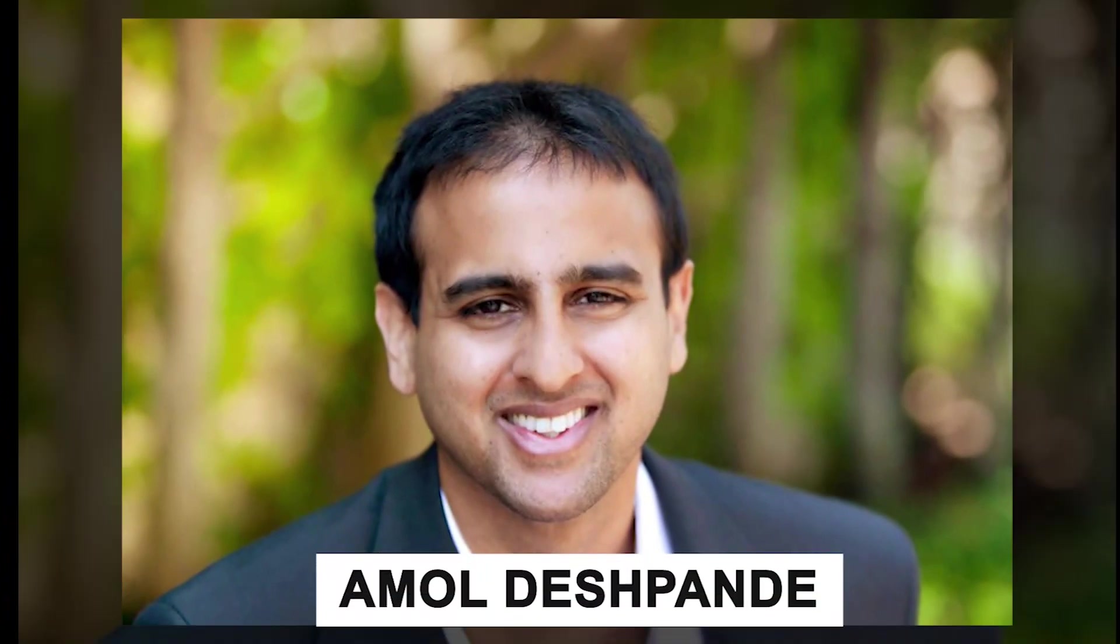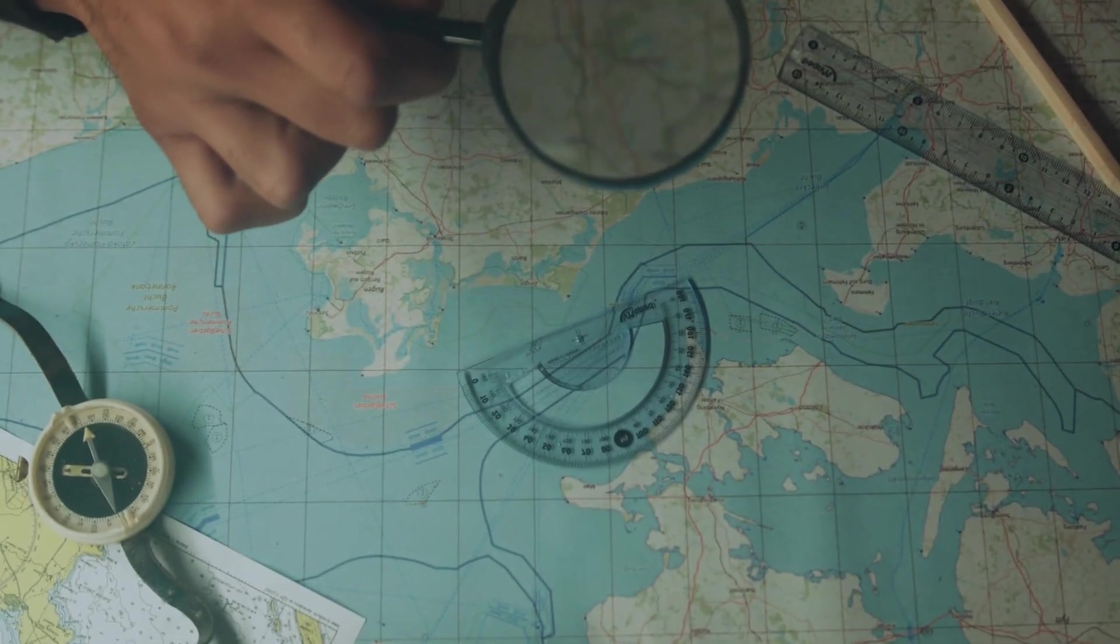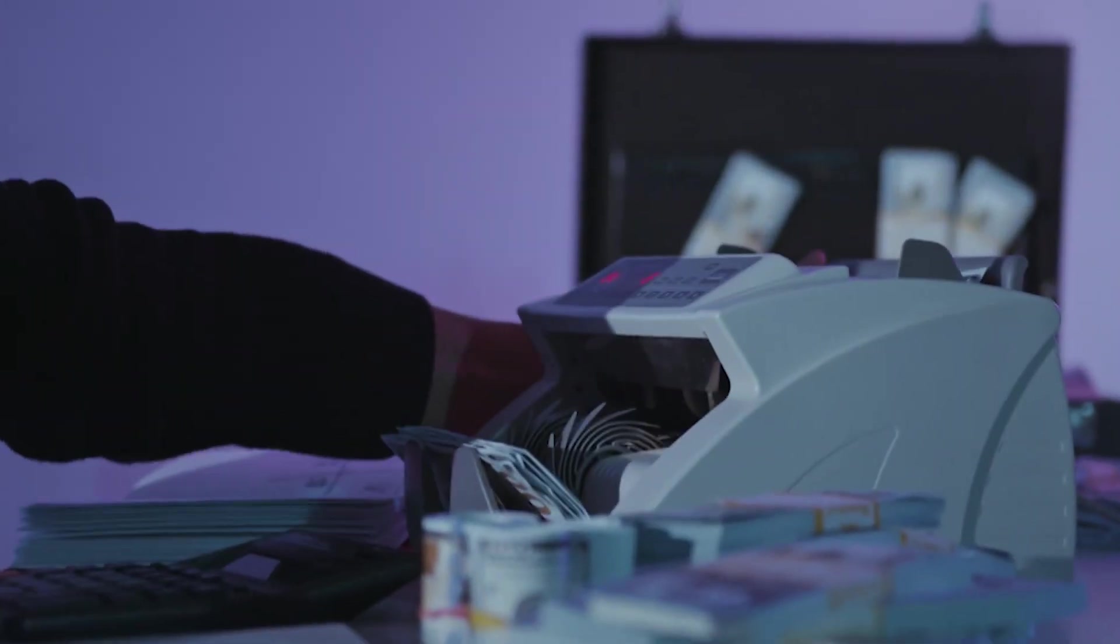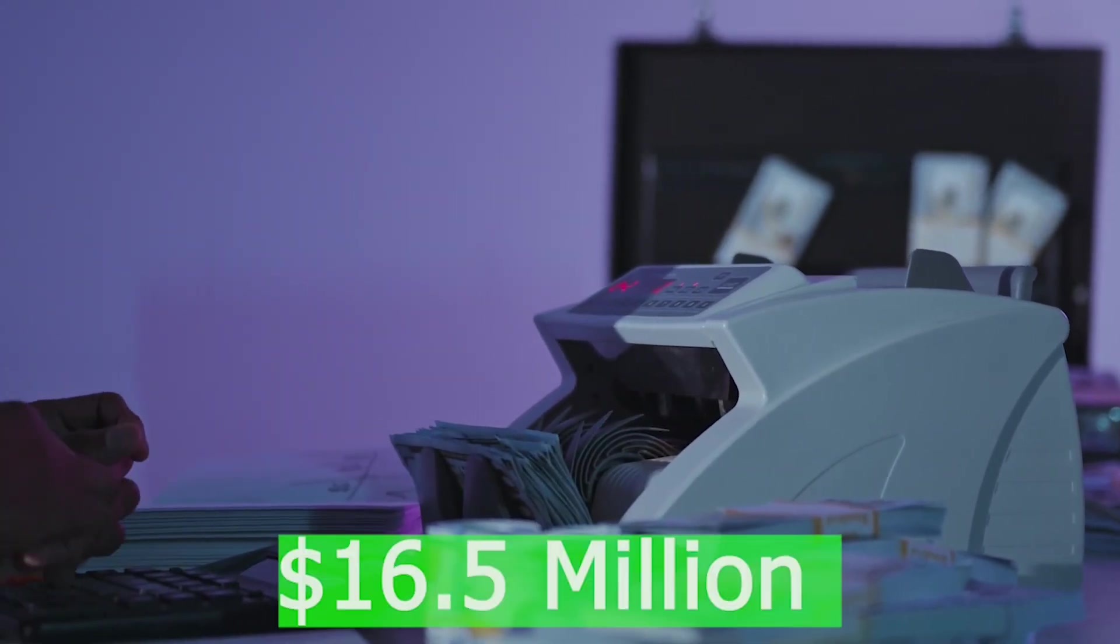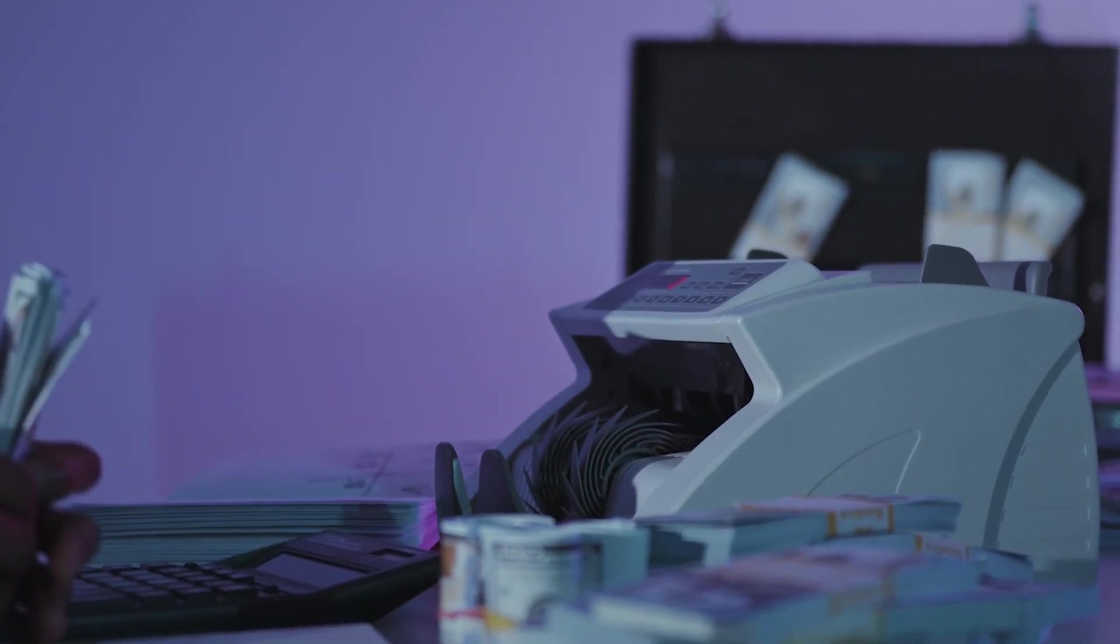However, it was a lucky encounter with Amol de Spand, a partner at Kleiner Perkins, that truly set Doug's aspirations on a soaring course. Recognizing the immense potential within Doug's idea, Amol became a passionate believer and chose to invest a staggering $16.5 million in 2014, catapulting the development of Doug's groundbreaking juicer to new heights.